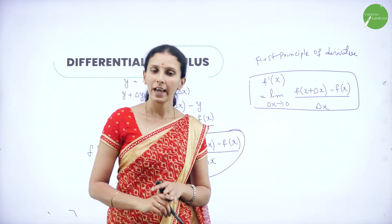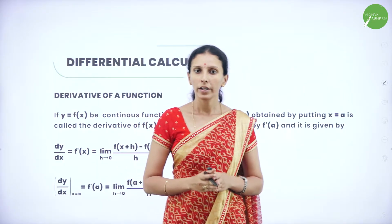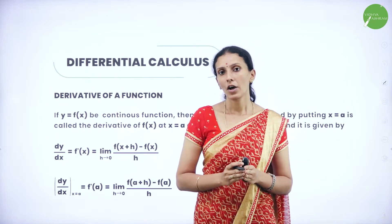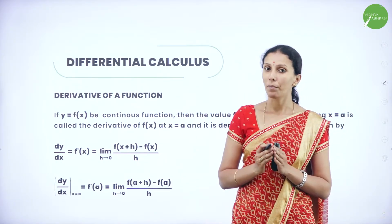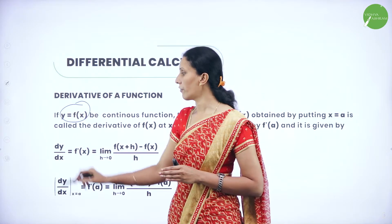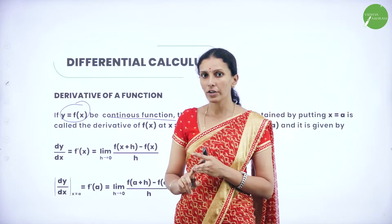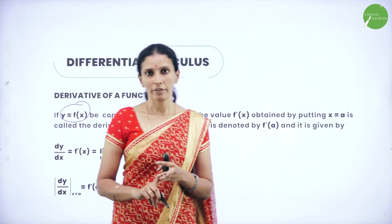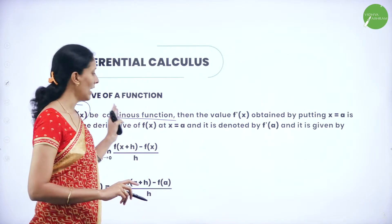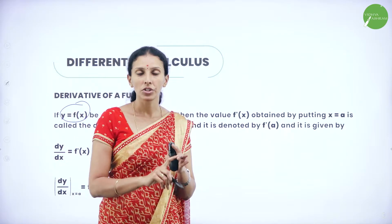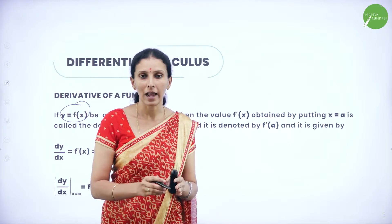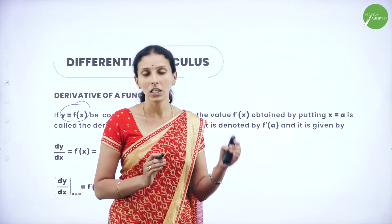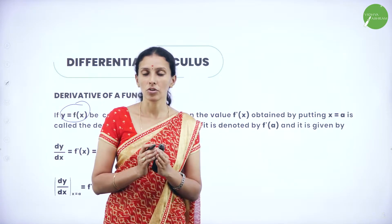Using this definition we can find the derivative of any function. The process of finding the derivative is called differentiation. Now let's see the derivative at a given point. Let y = f(x) be a continuous function. A function is continuous if its left-hand limit and right-hand limit equal the functional value. For a function to be differentiable it must be continuous, meaning the limit must exist — that is why we write lim(δx→0) in the first principle.